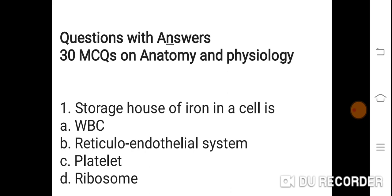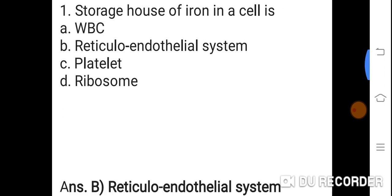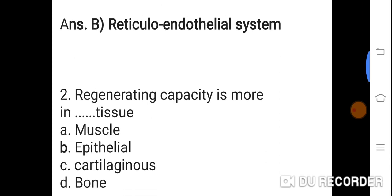Question number 1: Storage house of iron in a cell is? Option A: WBC. B: Reticuloendothelial system. C: Platelet. D: Ribosome. Correct answer is B. Reticuloendothelial system is the storage house of iron in a cell.